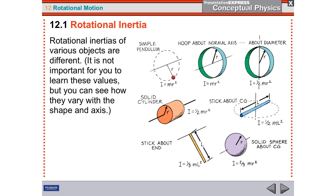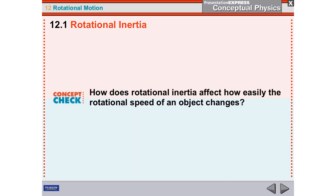The main default formula for rotational inertia is capital I equals mass times the square of the radius. Final question: how does rotational inertia affect how easily the rotational speed of an object changes? The higher your rotational inertia — which depends on where the mass is located — the harder it is to make something spin, and the harder it is to stop something already spinning. The closer the mass is to the pivot, the lower the rotational inertia. The higher the rotational inertia, the larger capital I will be.